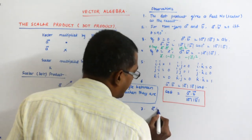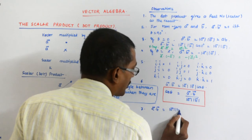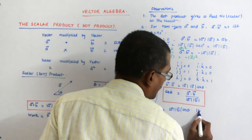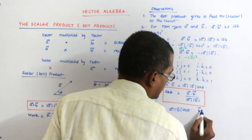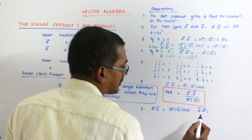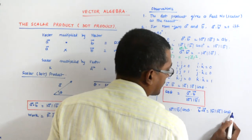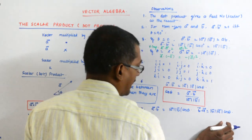Also, A dot B is what? Mod A mod B cos theta. What will be B dot A? B dot A will be mod B mod A into cos theta. Are they the same?